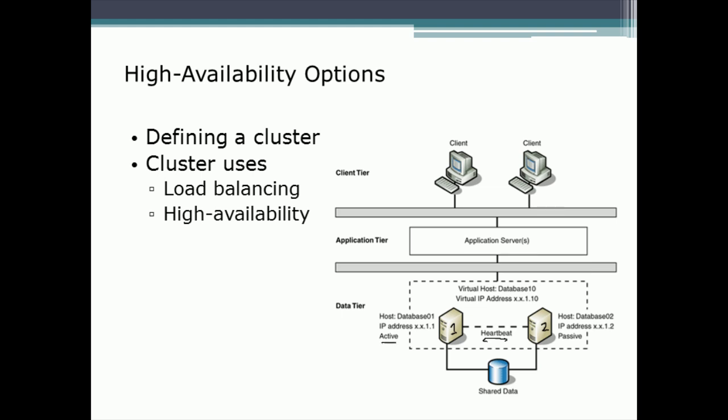In a cluster, only one of these two servers is active at one time. Active means this is the server that responds to the users. The clients — our users — are trying to access our servers, and they see the address they were given, probably through DNS, of whatever server they're trying to reach.